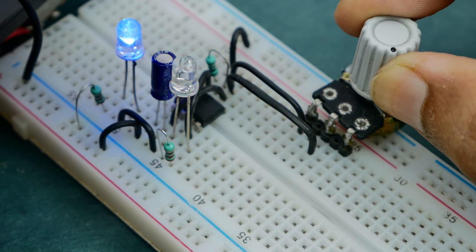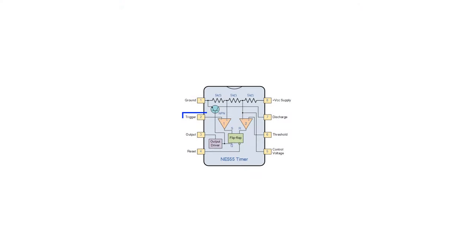Now let's try to briefly understand how this circuit works. If pin 2 detects any voltage less than one third of the supply voltage, it turns on the output. And if pin 6 detects any voltage more than two thirds of the supply voltage, it turns off the output.